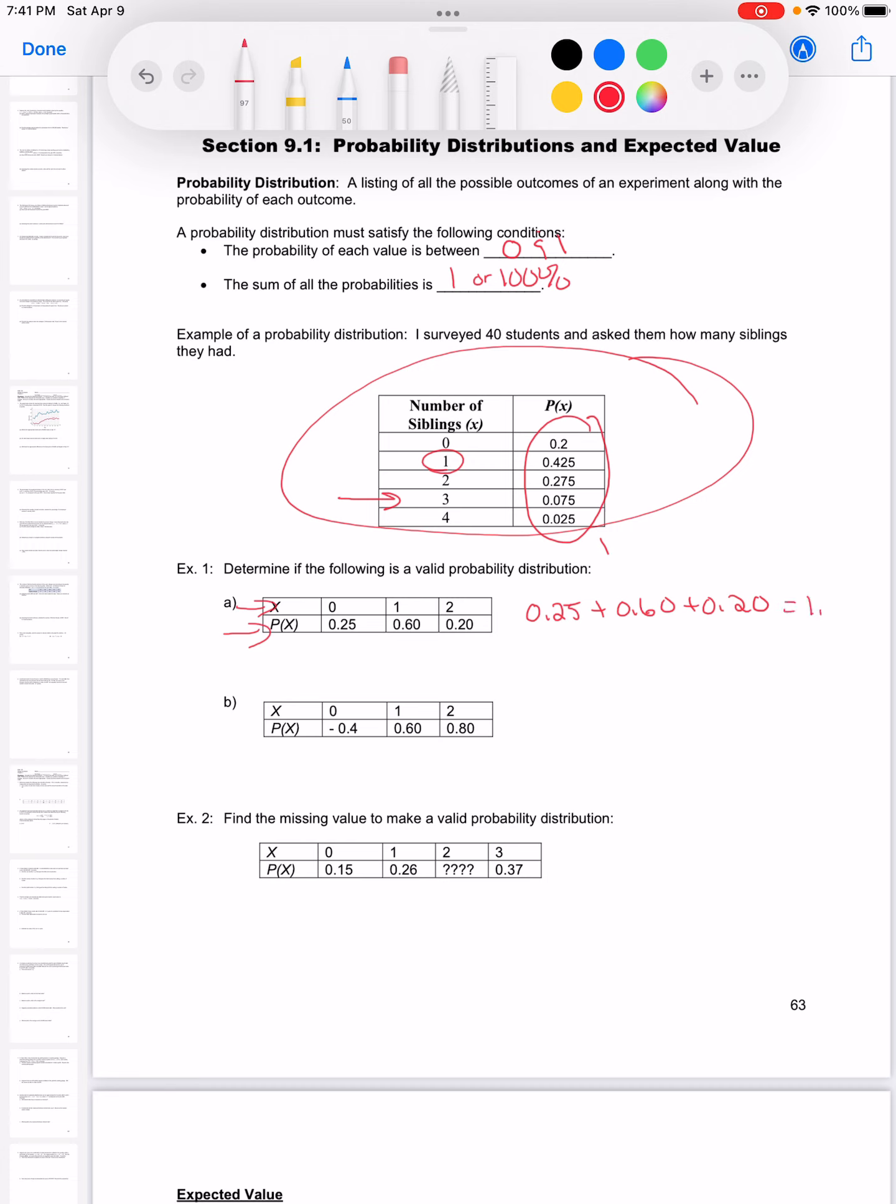But if I add those up, it gives me 1.05. That is too big. I cannot have that. They have to equal exactly 1. So this is not a valid probability distribution.